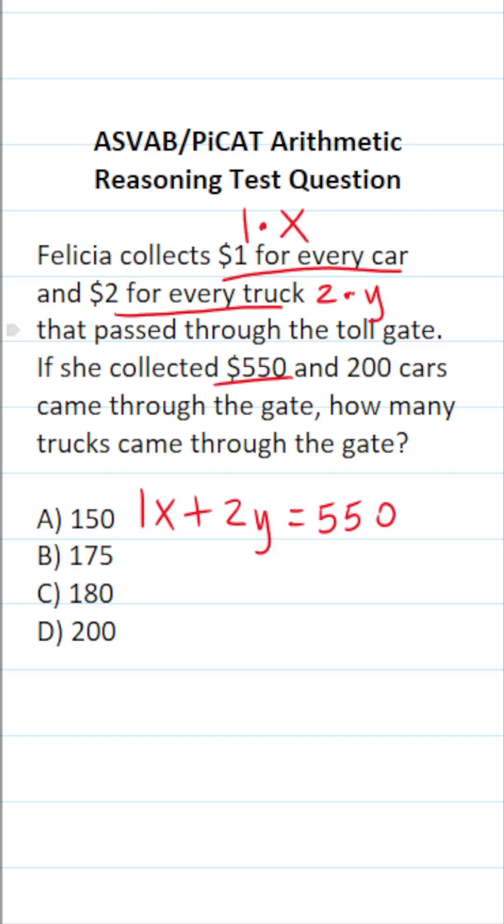What's more, we know that 200 cars went through the gate, so let's go ahead and plug that in for X. 1 times 200 is simply going to be 200. Again, 1 times anything is just itself, so 1 times 200 is 200 plus 2Y equals 550.